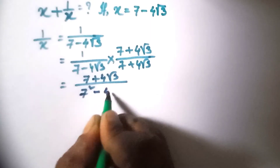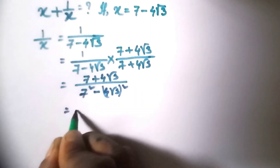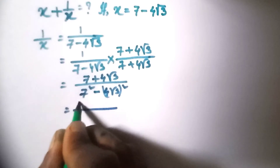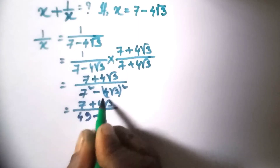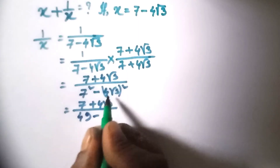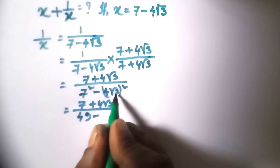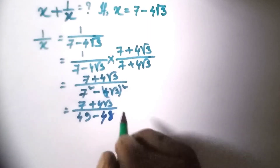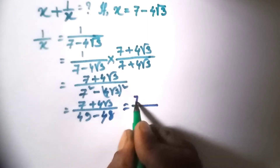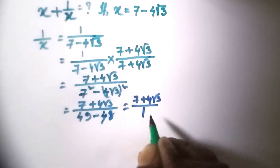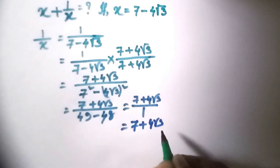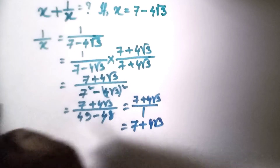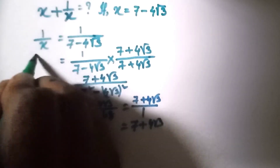So we compute 7 squared minus (4 root 3) squared in the denominator. That gives us 49 minus 48, since 4 squared is 16 and root 3 squared is 3, so 16 times 3 is 48. The denominator equals 1, so the value of 1 by x is 7 plus 4 root 3.